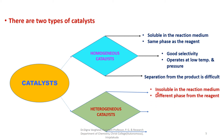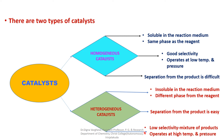Heterogeneous catalysts means the catalyst is insoluble in the reaction medium — the catalyst and the reagents are in different phases. The advantage of heterogeneous catalysts is that separation from the product is very easy because it is insoluble in the reaction medium. However, it has the disadvantage of low selectivity, meaning it does not give 100% selectivity and always gives a mixture of products — for example, 20% side byproducts and 80% major product. It also operates at high temperature and pressure compared to homogeneous catalysts.